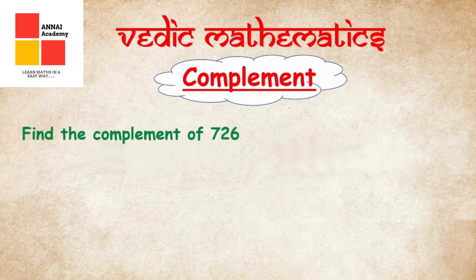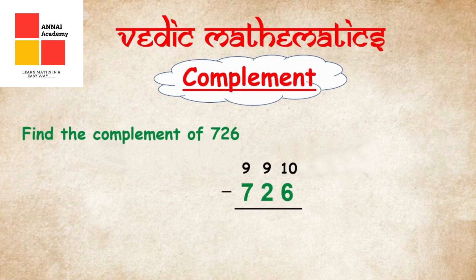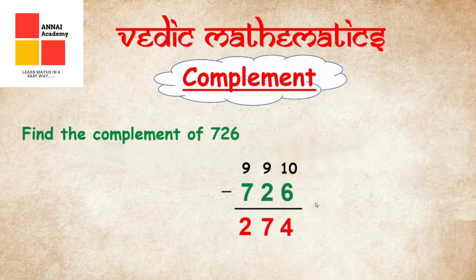Now let's find the complement of 726, which is a 3-digit number. Remember the formula: All from 9 and last from 10. Starting from the left: we minus 7 from 9 and get 2, then minus 2 from 9 and get 7, then minus 6 from 10 and get 4. The complement of 726 is 274.